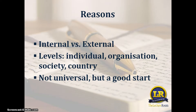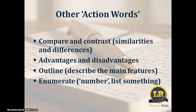But in all levels, you can find some internal processes that led to certain changes or developments, and external circumstances that shaped those changes. So that's a place to start. There are other action words — for example, compare and contrast, find similarities and differences, talk about advantages and disadvantages, outlining (which means describing the main features), or enumerating, like listing something.